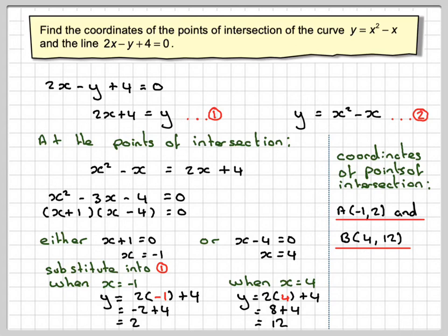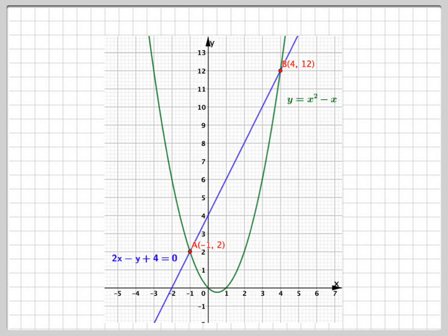Obviously, this is the way you have to do it, but if we look at it geometrically, this is the quadratic x squared minus x. This is the line 2x minus y plus 4. We get two points of intersection, one here and one here.